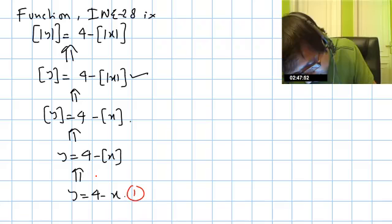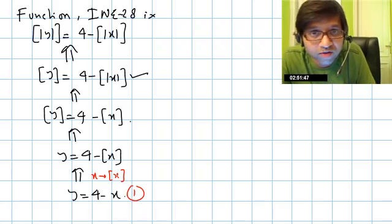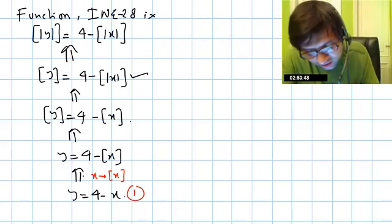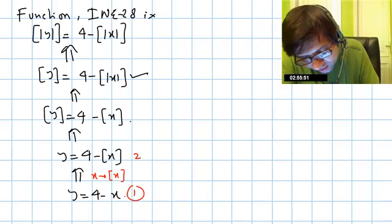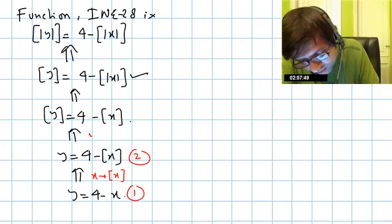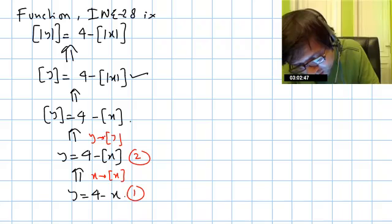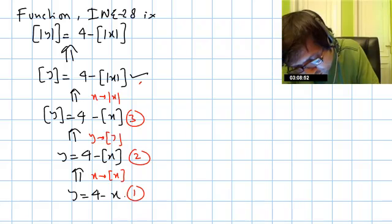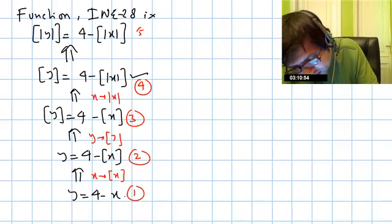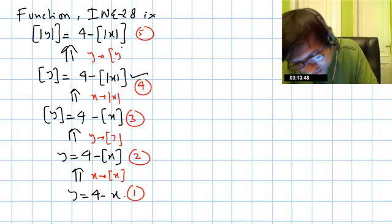We'll draw the graph of the straight line, then replace x by greatest integer of x — applying the transformation steps for replacing x by [x] to draw the second graph. In the second step we replace y by greatest integer of y, using the known transformation to get the third graph. Then from third to fourth, replace x by mod x; and from fourth to fifth, replace y by greatest integer of y.